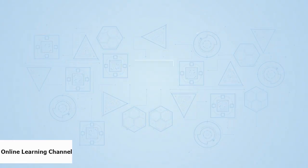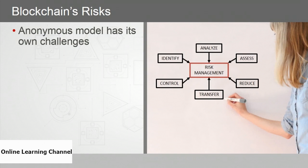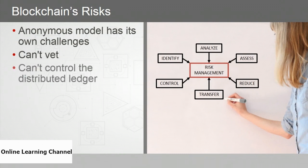The anonymous blockchain model, where nodes aren't known, has its own challenges. You can't let users determine their own identity or even know if their participation is legitimate, and you can't control the distributed ledger because every anonymous user has a copy. The ledger is protected by its baked-in security through encryption and by the consensus rule, which states that a majority of blockchain nodes must agree before any transactions are added.